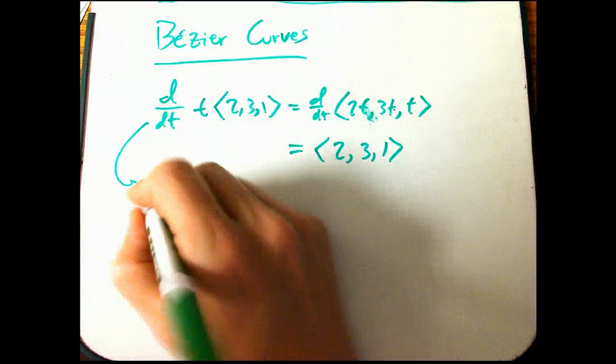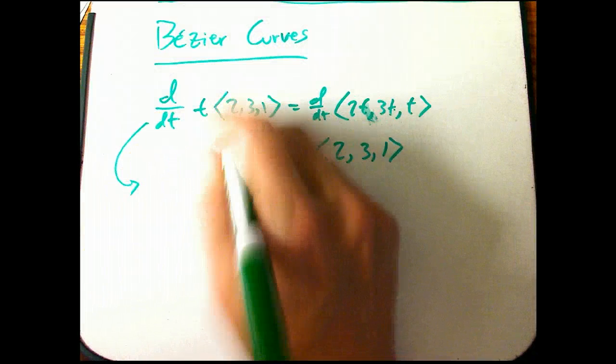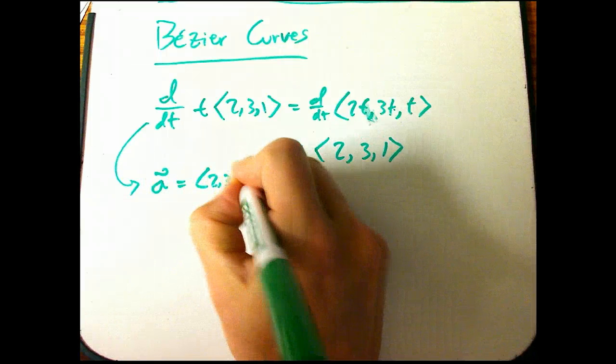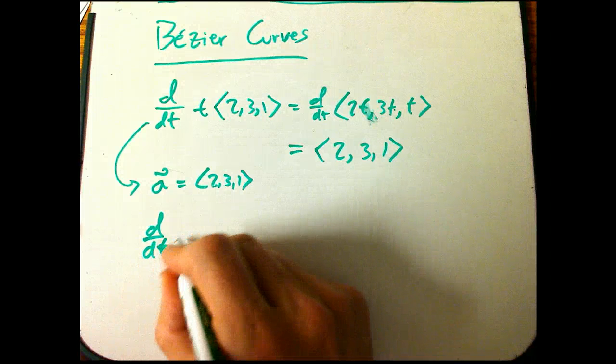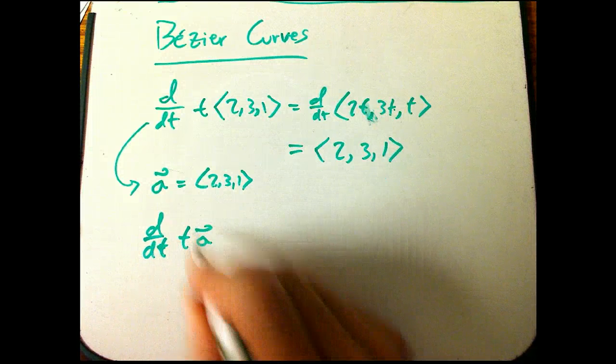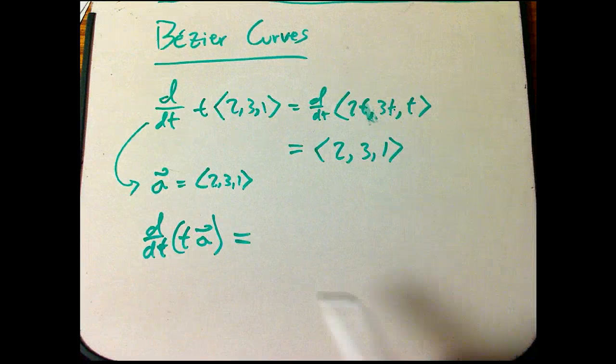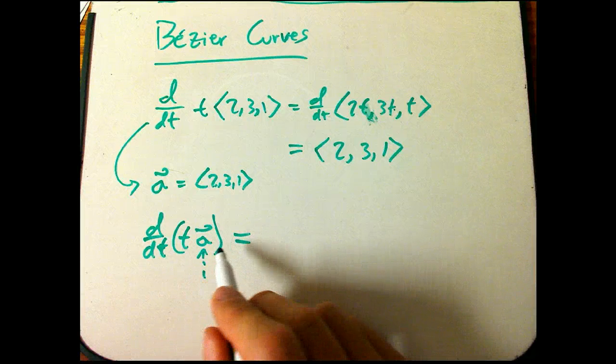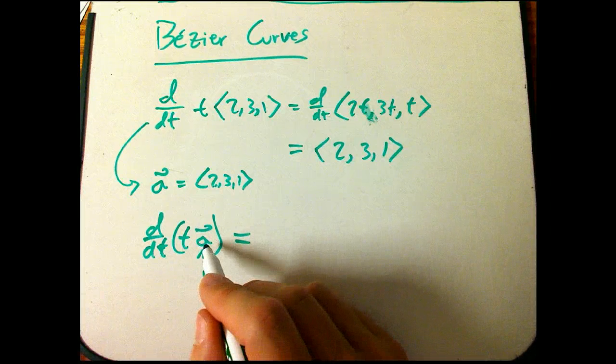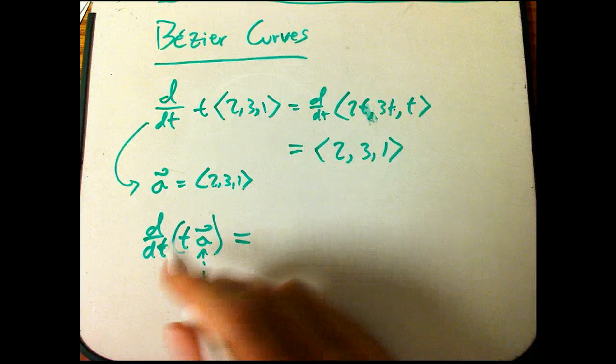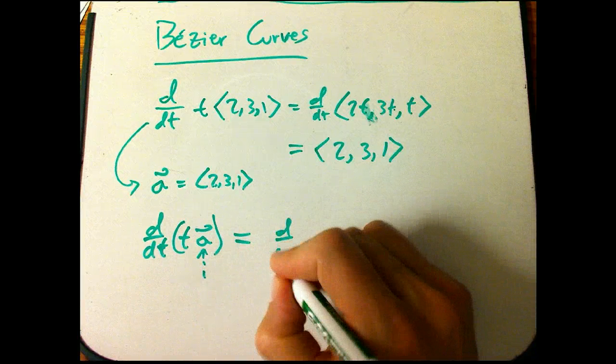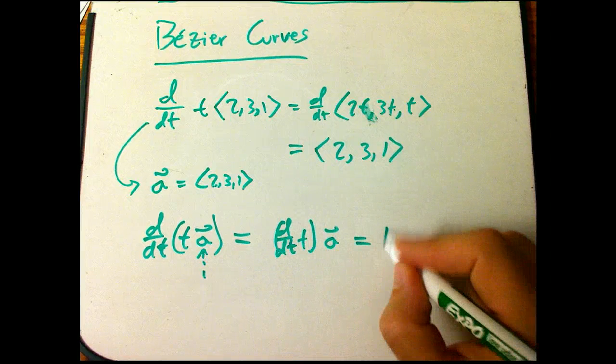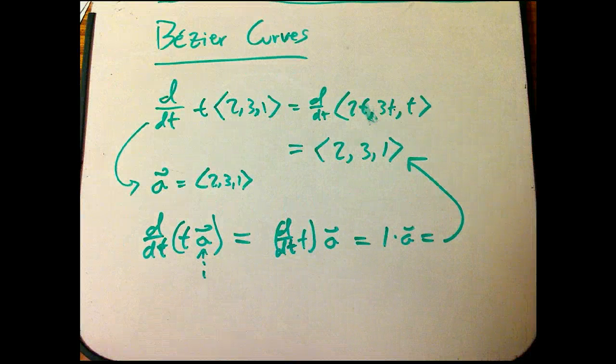But there's a slicker way to do this. This is just some constant vector, let's just call that a = (2, 3, 1). And so this is the derivative of a scalar function times that vector. One of the rules for derivatives is, this is just a constant. It's a complicated object in terms of the geometry, it's a vector, but in terms of calculus, it's simple, it's a constant. Constant times anything just basically comes out. So it's going to be just derivative of t times that a. Well, that's just 1 times a, and indeed, that's this guy.